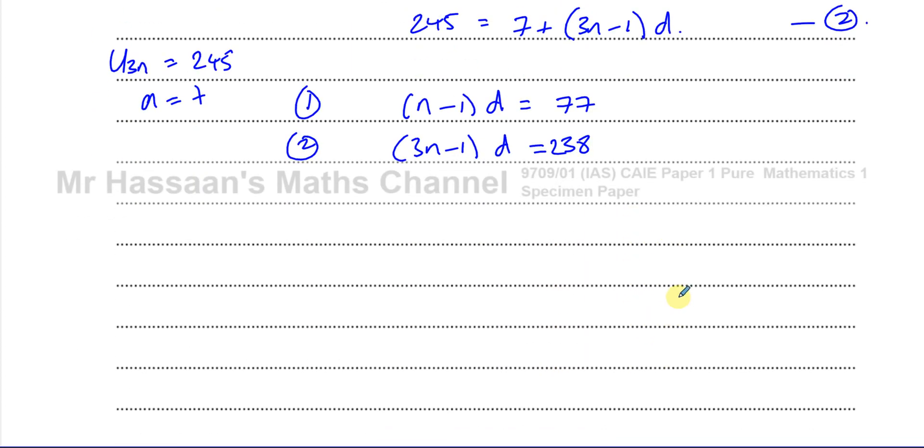So these two equations now I can solve them. I need to find what n is, so I don't need d. So I can eliminate d, and there's a nice way of eliminating d here by taking these two equations and dividing them. If I divide these two equations, if I take equation 1 divided by equation 2, what will happen is the d will cancel out. Now I have n minus 1 times d divided by 3n minus 1 times d is equal to 77 over 238, and the d cancels out.